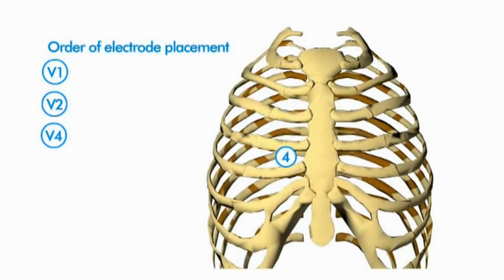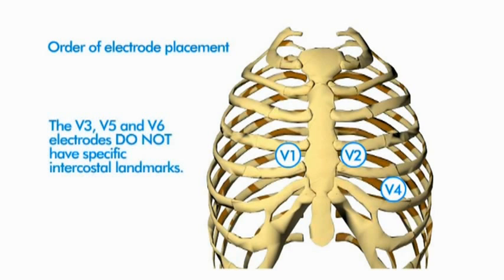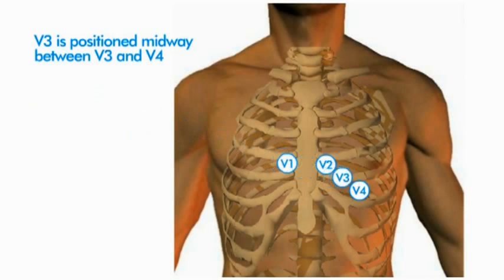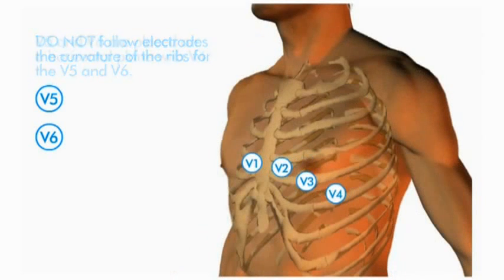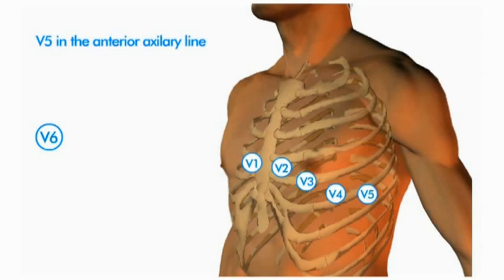Once you've found the 4th intercostal space, position the V1 and V2 electrodes at the sternal borders. The next step is to place the V4 electrode, positioned mid-clavicular line at the 5th intercostal space. The remaining electrodes do not have specific intercostal landmarks — they are placed in relation to V1, V2, and V4. The V3 electrode is situated midway between V2 and V4. Do not follow the curvature of the 5th intercostal space for V5 and V6; instead, V5 and V6 are positioned on a horizontal plane with V4. V5 is placed in the anterior axillary line, and V6 is placed in the mid-axillary line.